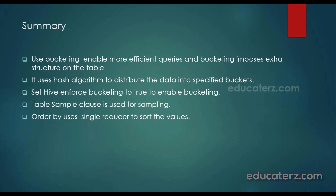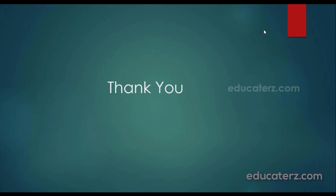In this module we have learned how to create bucketing in Hive and how it improves performance by distributing values into a fixed number of bucket files using the hash algorithm. Don't forget to enable hive.enforce.bucketing to true. We also covered the table sample clause for sampling based on rows or percentages. For sorting, we have ORDER BY, SORT BY, DISTRIBUTE BY, and CLUSTER BY — ORDER BY uses a single reducer, while CLUSTER BY combines SORT BY and DISTRIBUTE BY. Thank you.